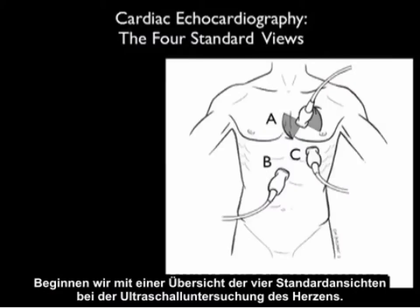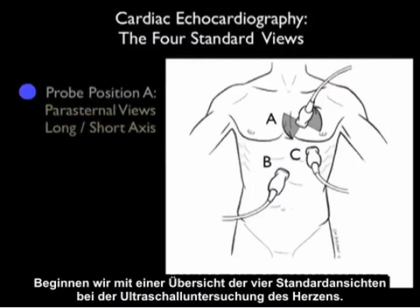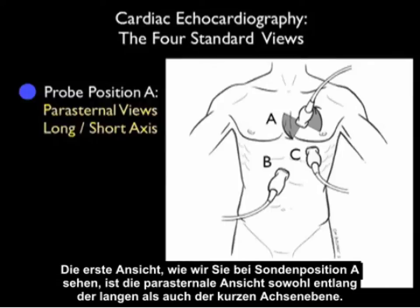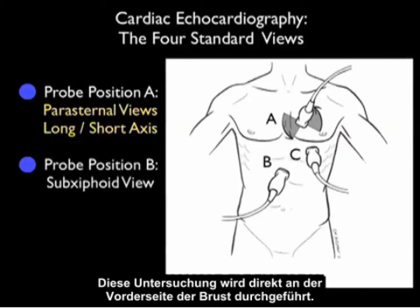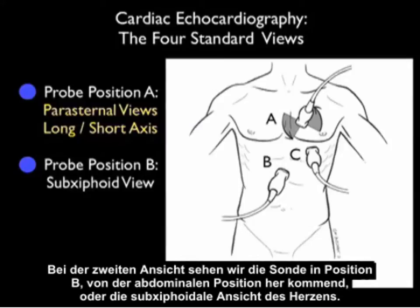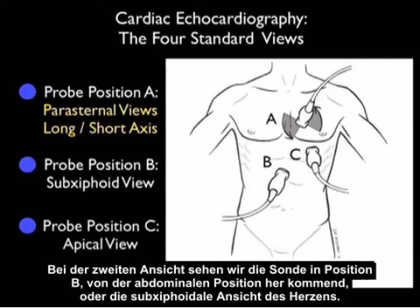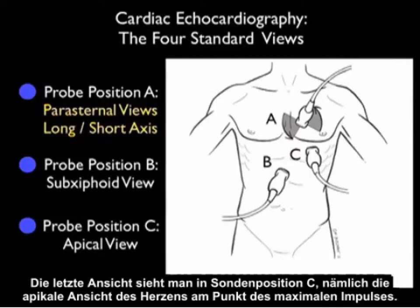Let's begin by reviewing the four standard views of the cardiac echo exam. The first view, as shown in probe position A, is the parasternal views — both long and short axis planes — performed directly on the anterior chest wall. The second view, probe position B, comes from the abdominal position or the subxiphoid view of the heart. The last view is shown by probe position C, the apical view of the heart at the point of maximal impulse.